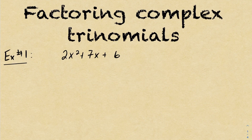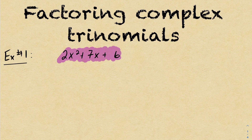Now we're going to be taking a look at factoring complex trinomials. This is obviously a quadratic — the degree is 2. But unlike simple trinomials, the leading coefficient here is not a 1. And because the leading coefficient is not a 1, we cannot factor it using product sum. Our focus today is factoring complex trinomials, i.e. that leading coefficient is not a 1.